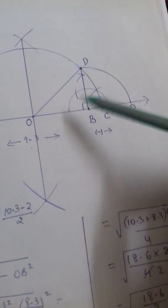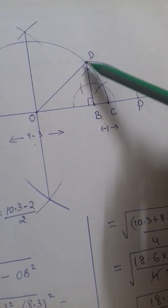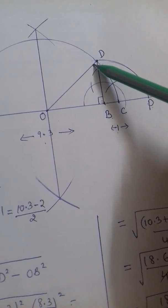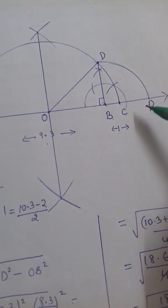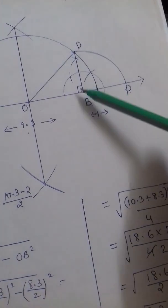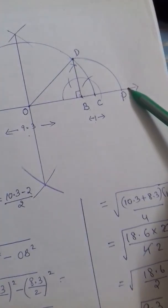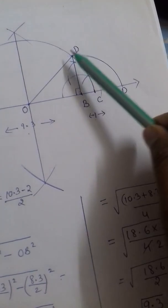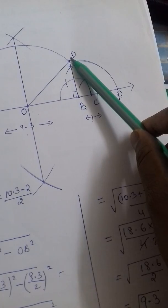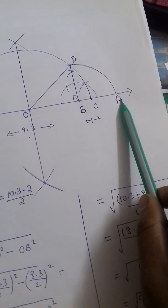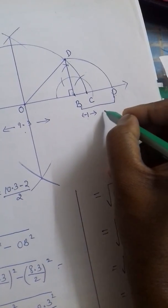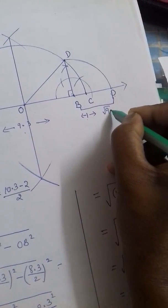So from the figure, we found that value of BD is square root of 9.3. Now taking B as center and BD as radius, we have made this arc which touch the number line at P. So BD and BP are equal because they are parts of the same arc. So if BD is square root of 9.3, then BP is also square root of 9.3. So this part represents square root of 9.3.